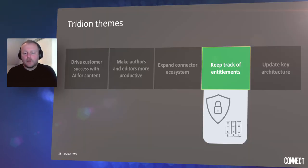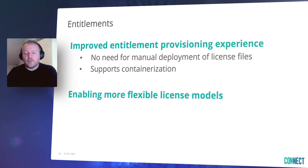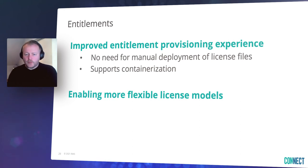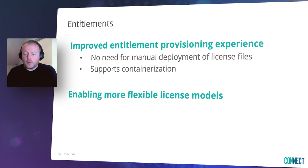The fourth theme is about covering entitlement tracking. The aim for an updated entitlement capability is to improve the provisioning experience for the customer on one hand and enable more flexible license models in the future on the other. With regards to provisioning, this will remove the need for manual deployment of licenses — no need to copy files to multiple machines manually anymore. This greatly improves flexibility in deployment as it will support containerization. For ultimate flexibility, we're looking at ways to enable customers to scale up and down more on demand — for instance, when a customer experiences peak load during a campaign. A flexible license model could be a pay-as-you-go model where you don't need to buy licenses for peak load up front, but only pay for what you use.